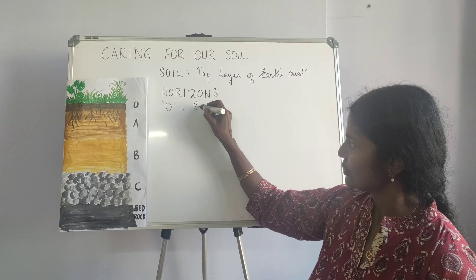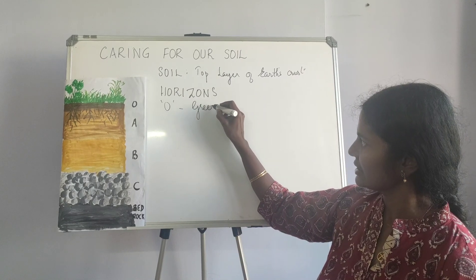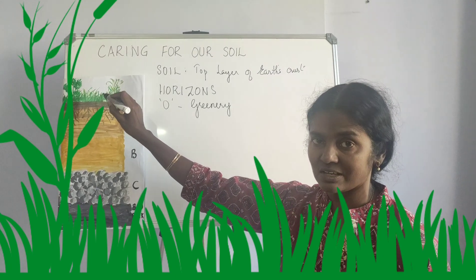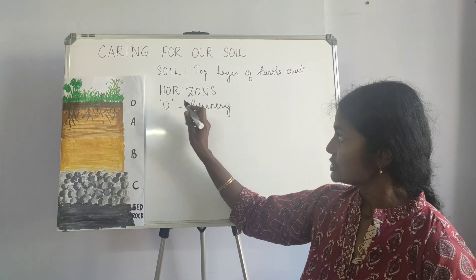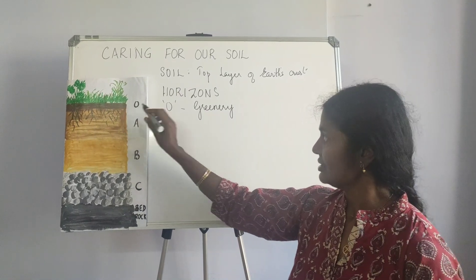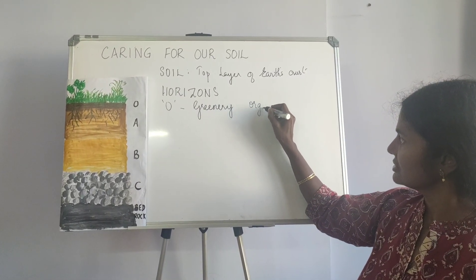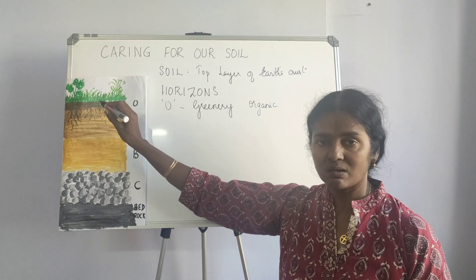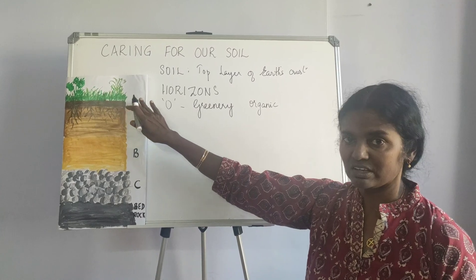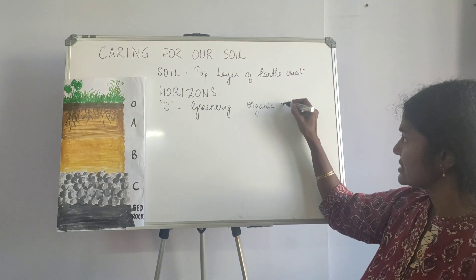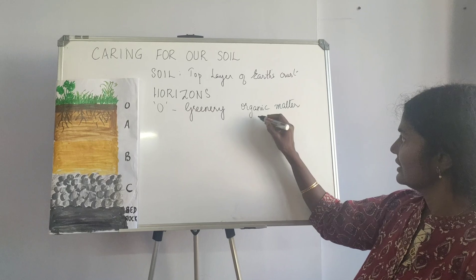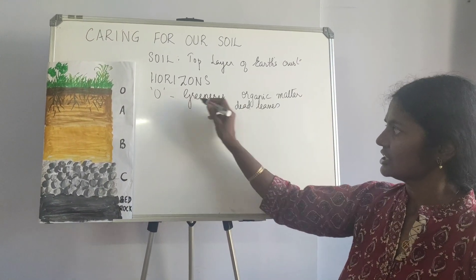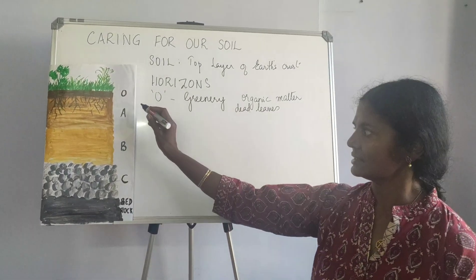This is the place where you have all the greenery. Every green tree, bush, and plant grows in this layer. So this layer of soil is filled with organic matter, because once things die, they settle down in the top layer of the soil. Dead leaves and everything will fill this layer O.